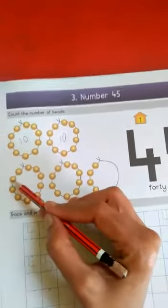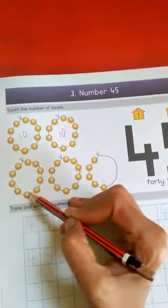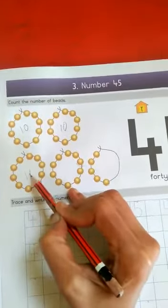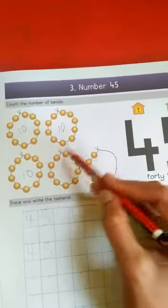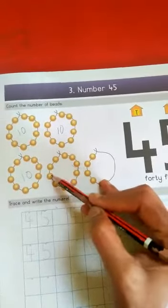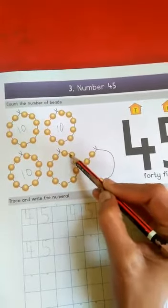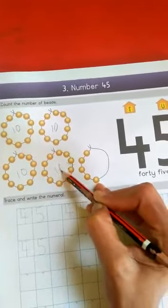Count here. 1, 2, 3, 4, 5, 6, 7, 8, 9, and 10. Here also, there are 10 beads. Count here. 1, 2, 3, 4, 5, 6, 7, 8, 9, 10. 10 beads.